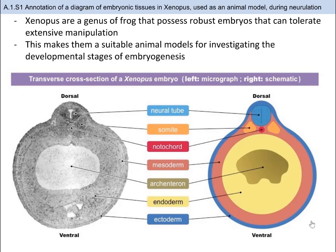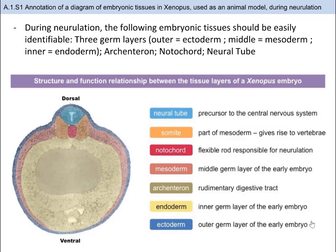Two reasons: first, they produce many eggs — the number of eggs frogs lay — and the second is how sturdy and robust they are, and that their development is easy to see. What you need to know how to label are the three germ layers — endoderm, mesoderm, and ectoderm — the neural tube, the notochord, and the archenteron, which will give rise to the digestive system. You can see all of that in the image here. The same thing is visible with the structures in the embryo and the functions they will develop into as a fully developed organism, whether it be tadpole, frog, or human.